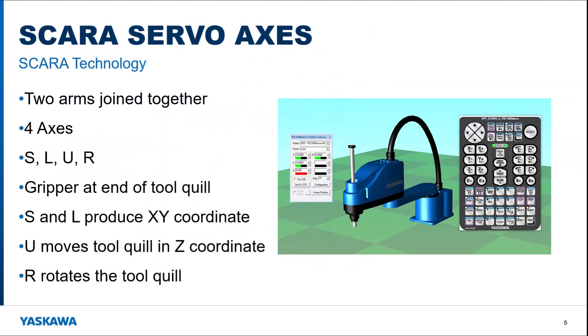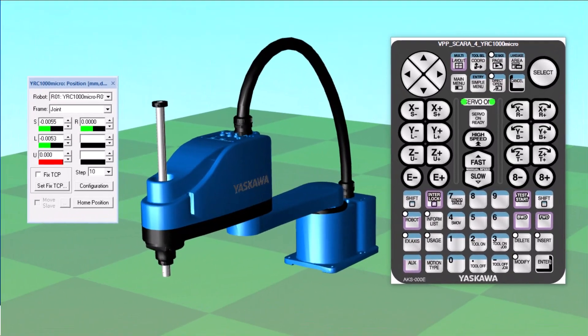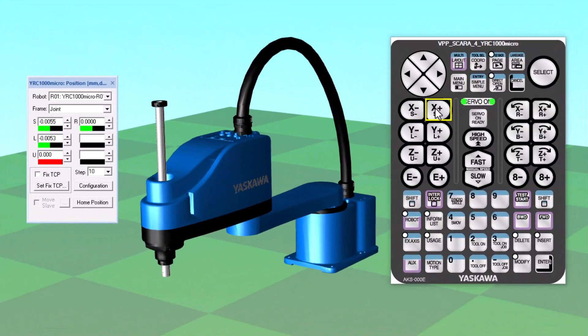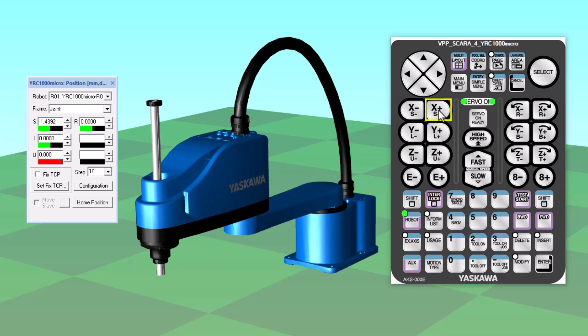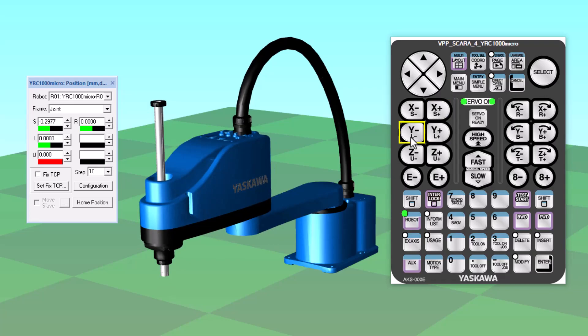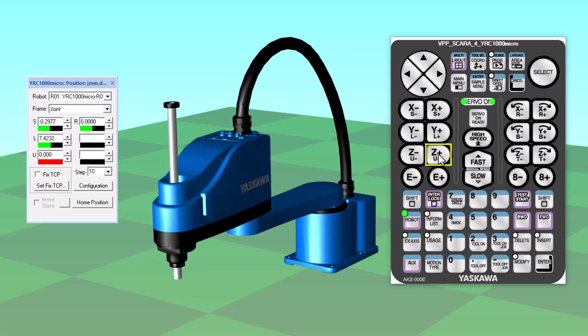The SCARA mechanism is driven by 4 servo axes. At Yaskawa, we label these as axis S, L, U, and R. The S axis moves the first section of the arm, which pivots at the base. The second axis, L, moves the second section of the arm. The end of this section supports the tool quill at the far end, which can move up and down with axis U and rotate with axis R.